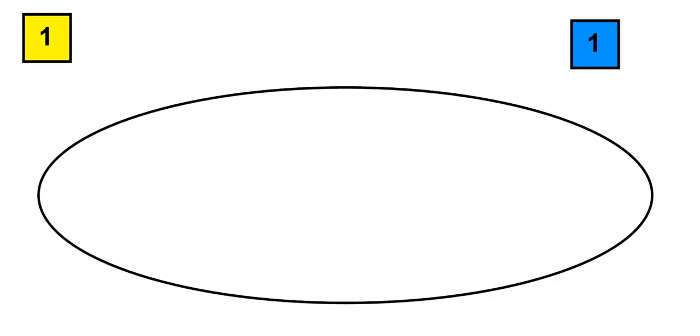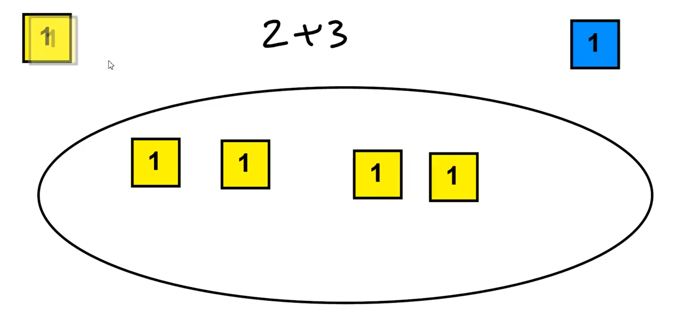So let's pretend for the moment that we're just going to add some integers, maybe 2 + 3. Here there's nothing fancy, right? We just have two, and then we have three more, and that's five. There's nothing fancy whatsoever.